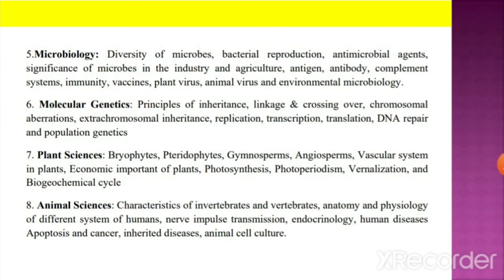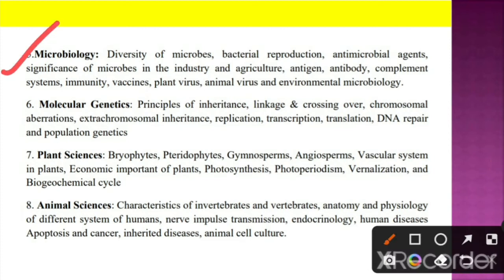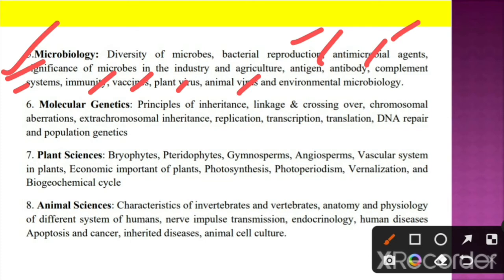Unit 5 is about microbiology. Here we have to understand the diversity of microbes, bacterial reproduction and antimicrobial agents, significance of microbes in industry and agriculture, antigen, antibody, complement systems, immunity, vaccines, plant virus, animal virus, and environmental microbiology.